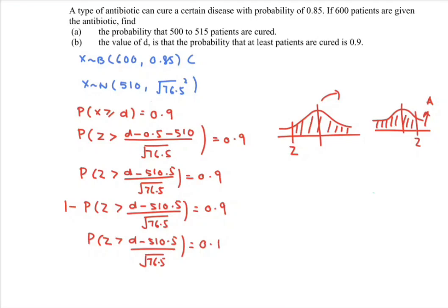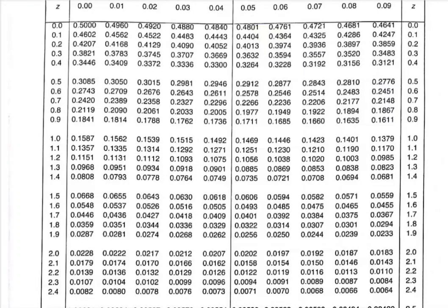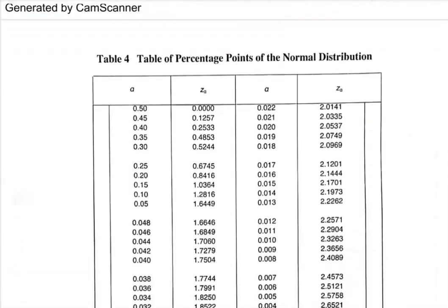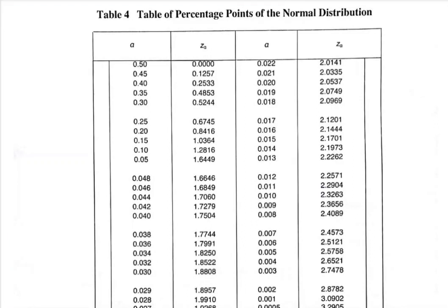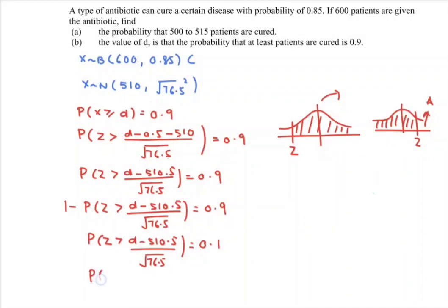Kindly refer to the table. So where is the 0.1? Very obvious, the 0.1 is located here. But for better approximation, we refer to table 4, the table of percentage points of the normal distribution. Find 0.1 — here we have the value of z equal to 1.2816. So the probability that z is greater than 1.2816 equals 0.1. Comparing the situation to find d: remember the z is negative, so z equals negative 1.2816. So d equals negative 1.2816 multiplied with the square root of 76.5.